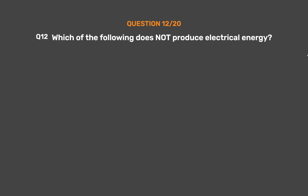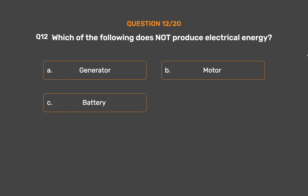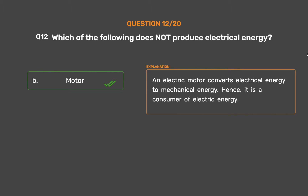Question number 12. Which of the following does not produce electrical energy? The correct answer is Option B: Motor. An electric motor converts electrical energy to mechanical energy. Hence, it is a consumer of electric energy.